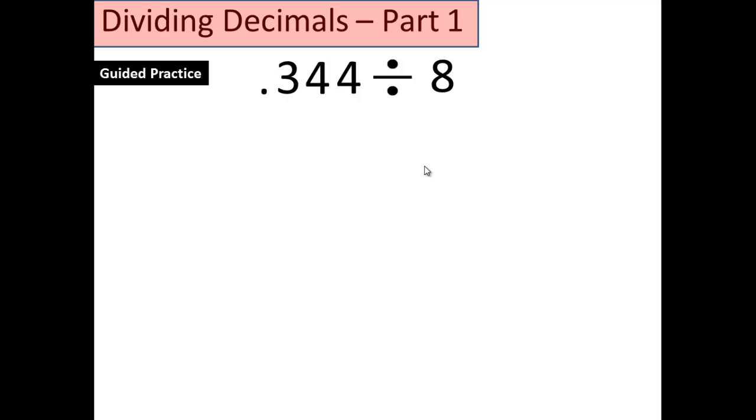All right. If you're back, you're telling me that you did this problem. We're going to check it out. First step. Crisscross. 0.344 should be in the house. 8 should be out of the house. Next step. What's the next step? Call it out, y'all. Did you pop it like it's hot? Nice job.